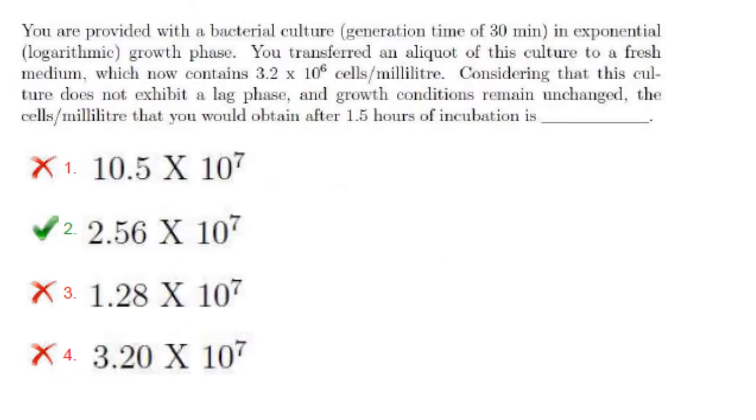You are provided with a bacterial culture with a generation time of 30 minutes in exponential growth phase. You transferred an aliquot of this culture to a fresh medium which now contains 3.2 × 10^6 cells per ml. Considering that this culture does not exhibit a lag phase and growth conditions remain unchanged, the cells per ml that you would obtain after 1.5 hours of incubation is 2.56 × 10^7, and I have explained this in my next slide.